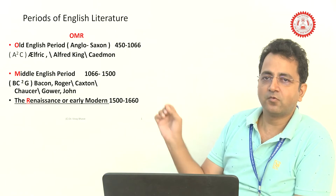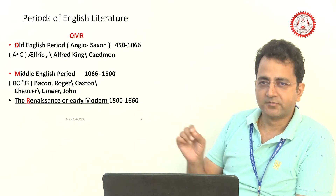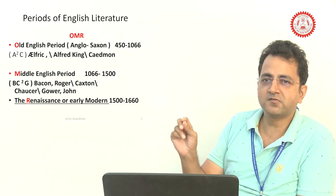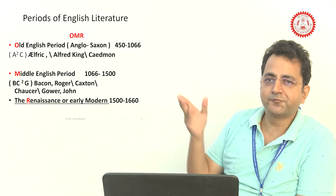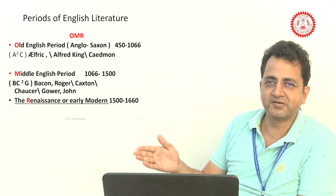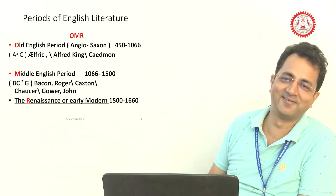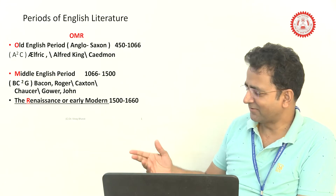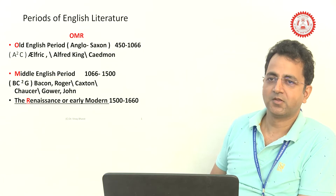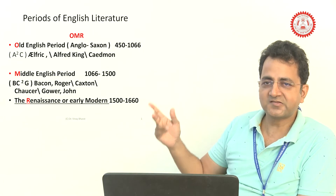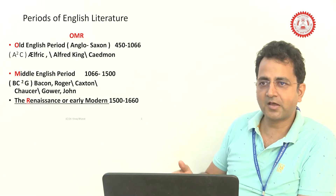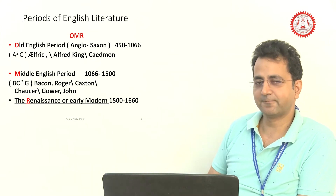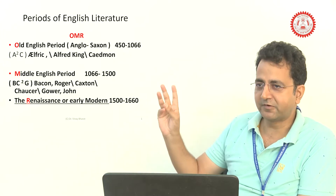O stands for Old English period, also known as the Anglo-Saxon period, which begins from 450 to 1066 AD. The famous writers of this period can be remembered as A²C — A-squared-C. A-squared means two A's: first A for Alfred the King, second A for Alfred the King again, and C for Caedmon. These three were the prominent figures of the Old English period.